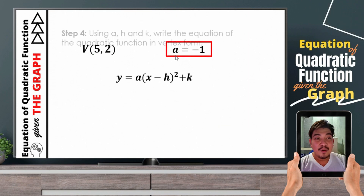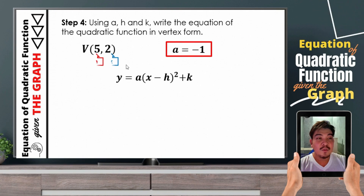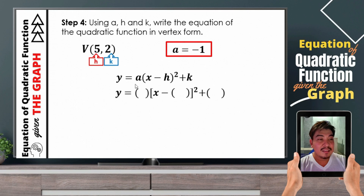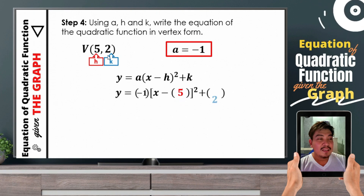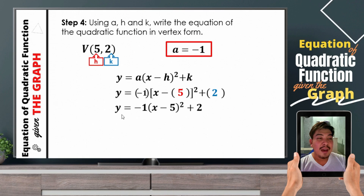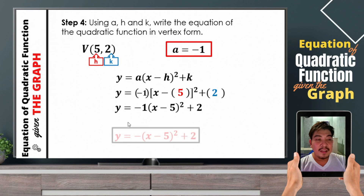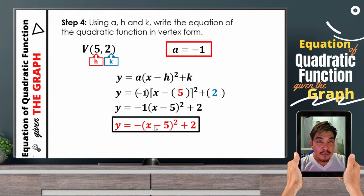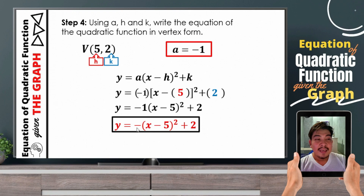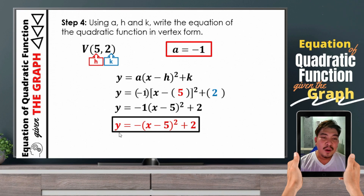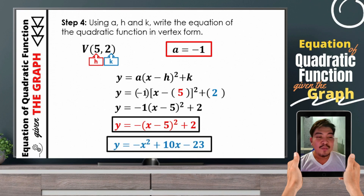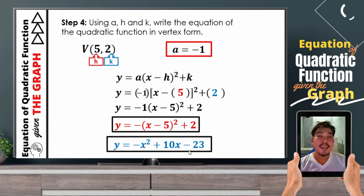We need the vertex and the value of a. We just need to substitute a, h, and k to our vertex form. So h is 5, k is 2. The value of a is negative 1, h is 5, and k is 2. Simplifying, we now have y is equal to negative 1 times the square of the binomial x minus 5 plus 2. We can rewrite this as y is equal to negative of the square of the binomial x minus 5 plus 2. Since no number is seen here, it is automatically negative 1. And if we change this to standard form, it is equivalent to y is equal to negative x squared plus 10x minus 23.